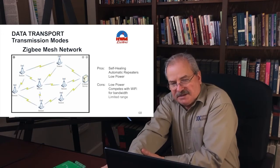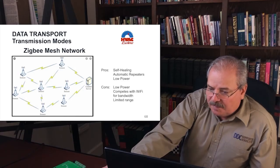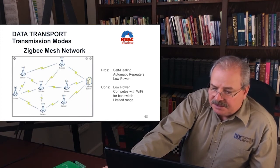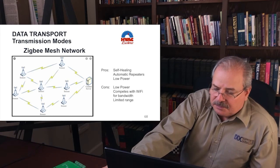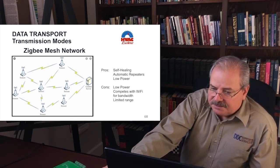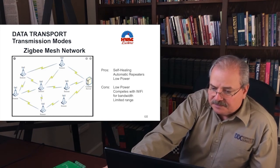Zigbee is a mesh network where each sensor isn't just transmitting back to the central server — it can transmit its message through other sensors. So if you get a data loss in one route, you can go a different route to communicate between the most distant sensor and the central server. One disadvantage of Zigbee is that it uses literally the same bandwidth and channels as Wi-Fi, so Zigbee traffic competes with Wi-Fi activity in your building, and there are some serious transmission distance limitations.